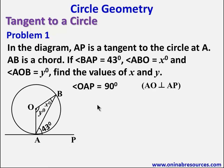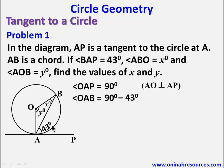OAP is established to be 90 degrees. OA is a radius and OB is also a radius, therefore triangle AOB is an isosceles triangle. As such, angle ABO is X degrees and angle BAO is also X degrees — base angles of an isosceles triangle. From there, angle OAB is 90 minus 43 degrees, which gives 47 degrees. Therefore, X is equal to 47 degrees.